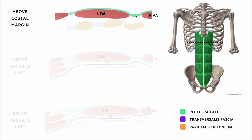At this level above the costal margin, we don't have the transversalis fascia because there is no contribution from the transversus abdominis muscle — transversalis fascia will only be present lower down where that muscle exists. There is also no parietal peritoneum here, because we're above the costal margin and haven't yet entered the abdominal cavity.